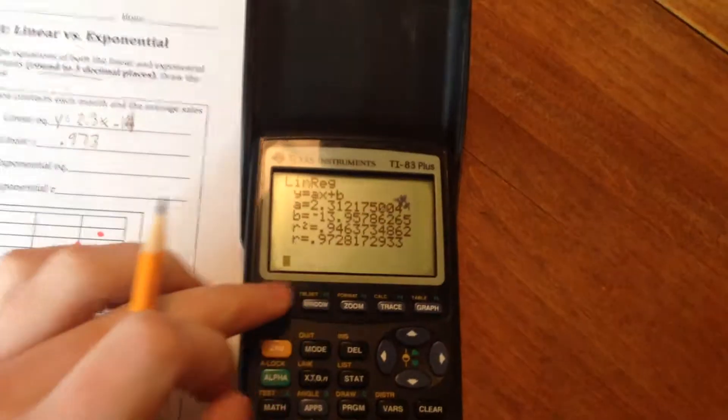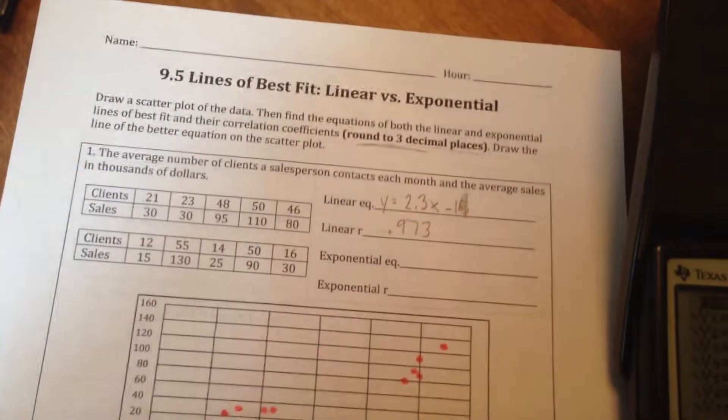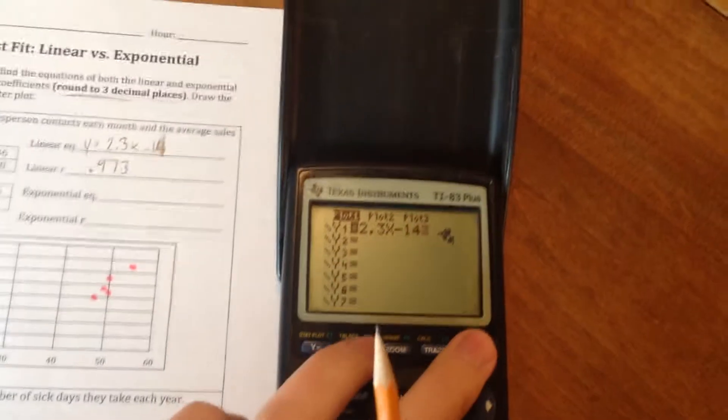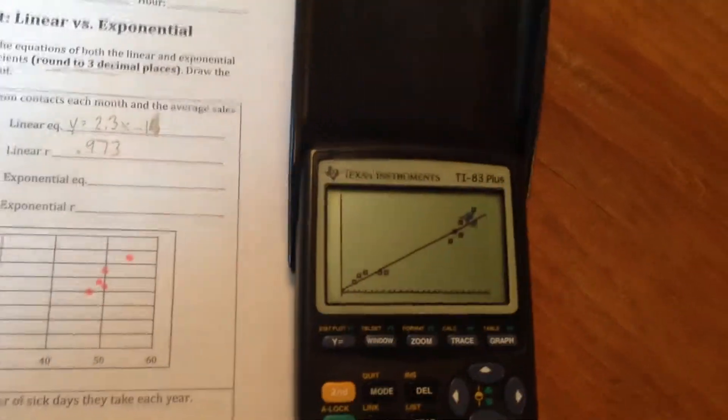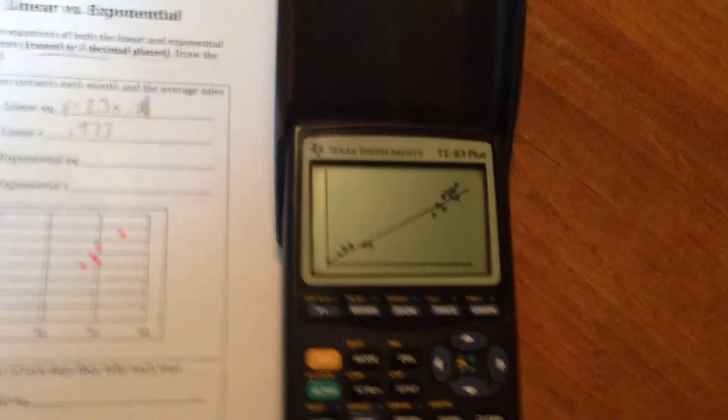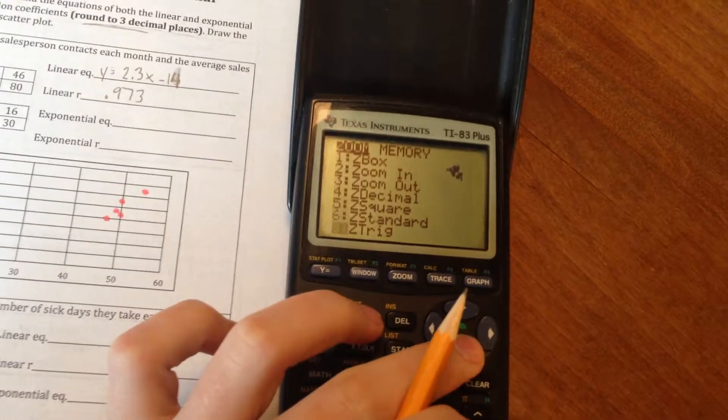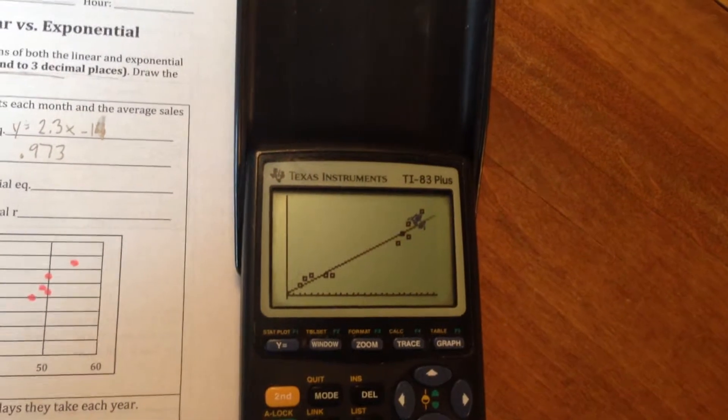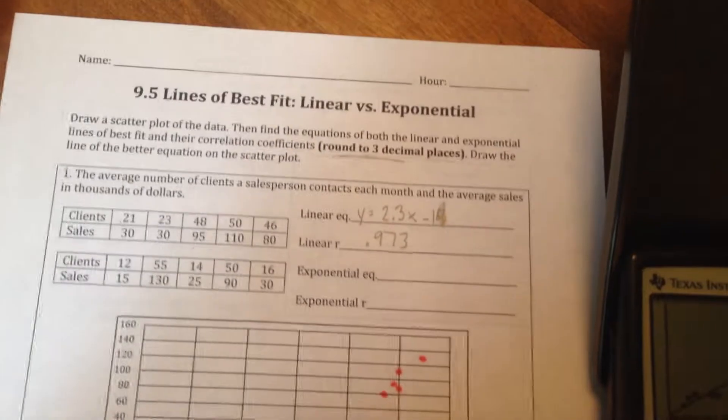Now, one way that we can double check that is we could go into our Y equals menu, type this equation in. So 2.3X minus 14. And let's graph that just to see what it looks like. Now, again, if you are not seeing your data look like this, you probably need to zoom better. So you've got to push zoom. And then, if you go down to option 9, that's going to fit the data around your statistics. That line looks like it pretty much goes through the middle of the data. So we know that that is the right equation for a straight line that would best fit this data. So that's a good thing.